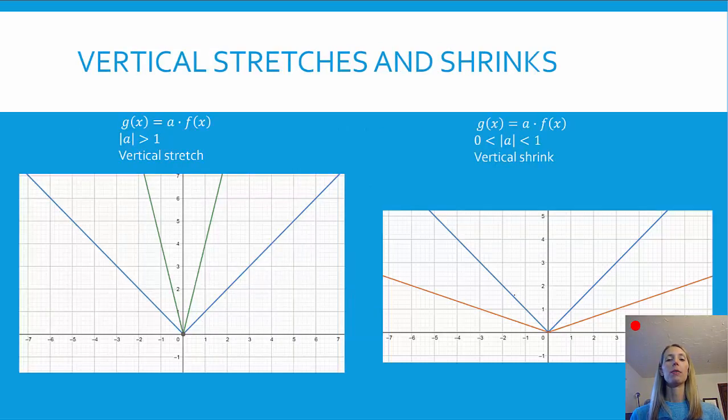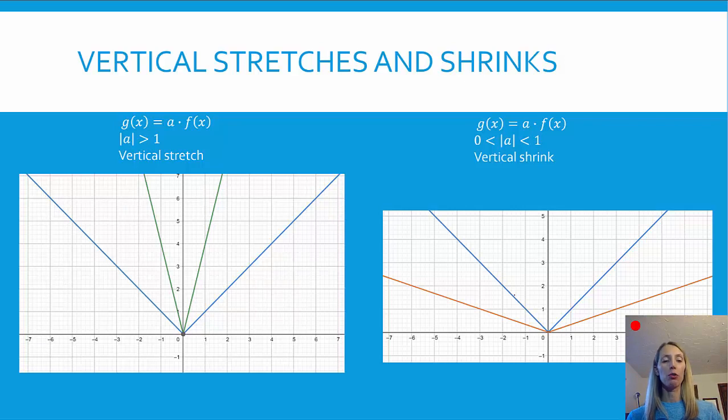So just to see how similar these are, here are some vertical stretches and shrinks. In either graph, the blue is the parent function. That's the parent function f(x) equals the absolute value of x. And that's just what the parent function looks like. So it starts at 0, 0, it goes to 1, 1, negative 1, 1, 2, 2, negative 2, 2.